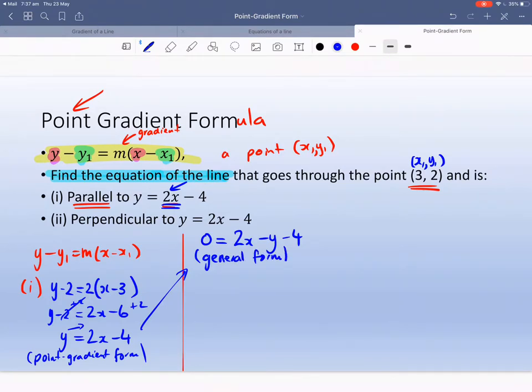There could be questions that ask you in general form or point gradient form. It will depend on the question. One thing about general form, it has to be whole numbers. You can't have fractions. If you've got fractions, multiply by the highest common factor in the denominator.